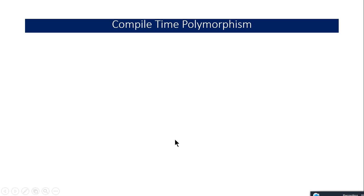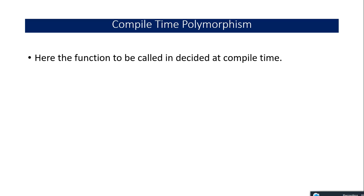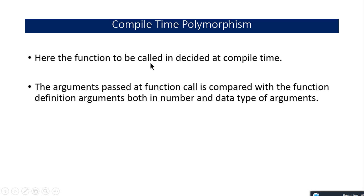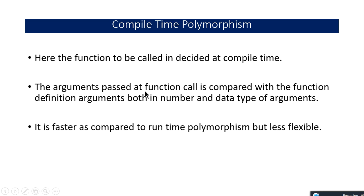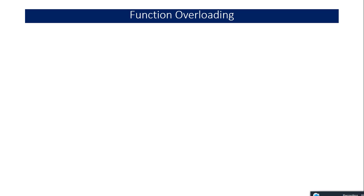In compile-time polymorphism, the function call is matched with the definition at compile time. The arguments passed at the function call are compared with the function definition — matching both the number and data type of arguments — just like constructor overloading. Compile-time polymorphisms are faster compared to runtime polymorphism, but they are less flexible.